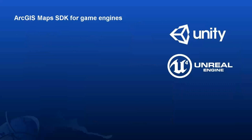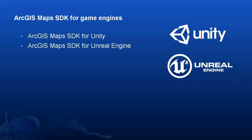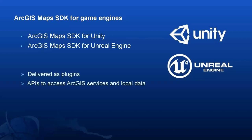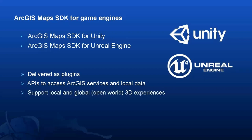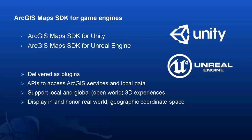With that in mind, Esri is delivering the ArcGIS Maps SDK as a developer product that integrates with the two market-leading game engines: Unity and Epic's Unreal Engine. The ArcGIS Maps SDK for Unity and the ArcGIS Maps SDK for Unreal Engine will be distributed as plugins and provide APIs to access ArcGIS services and local data. This work will be founded on support for local and global 3D experiences through a scene, which provides context to display and interact with geospatial data in real-world geographic coordinate space.